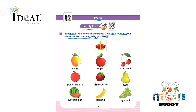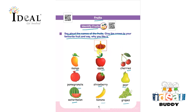So first of all the child has to say aloud the names of the fruits. First one is mango, next is apple, next is cherries, after that pomegranate, next is strawberry, after that it's pear, next is watermelon, next banana, and after that it's grapes.